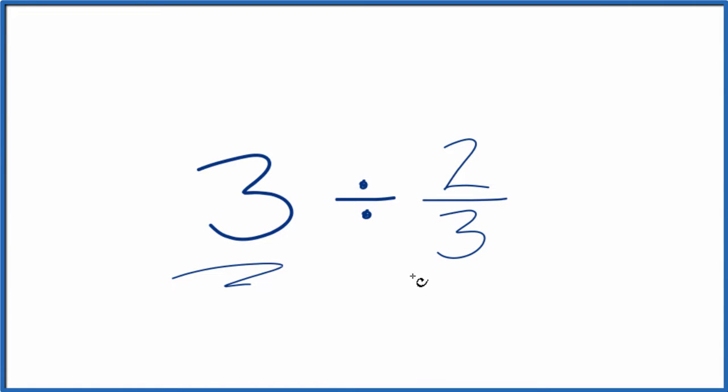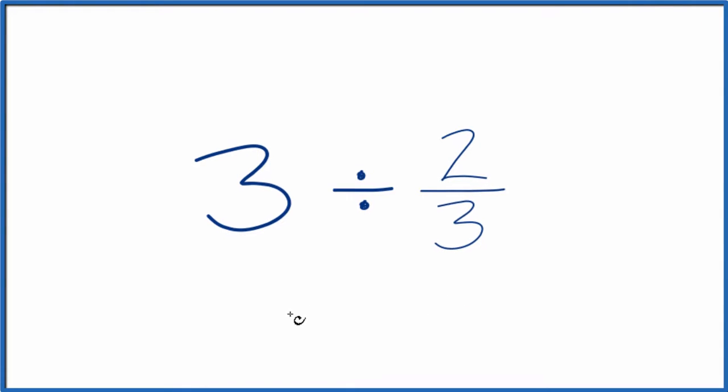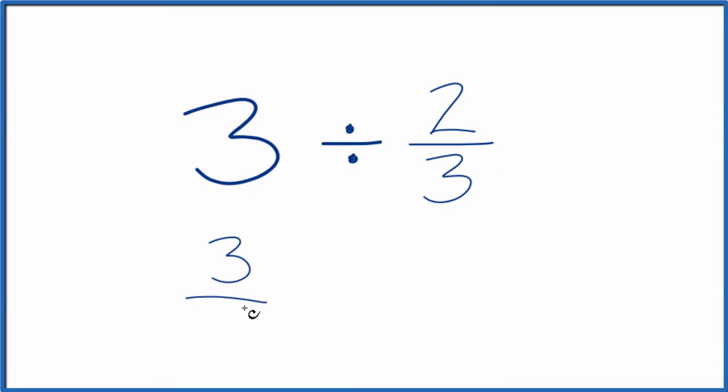Let's divide 3 by 2 thirds. Here's how you do it. Let's call this 3 over 1. It's still 3, but now we have the fraction.